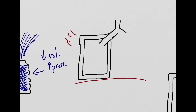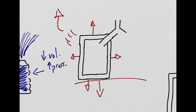On inhalation, the diaphragm contracts and moves inferiorly. The external intercostals will contract as well and bucket handle the ribs up and out. This causes the pleural box to get larger. As we learn in Boyle's Law, as the volume increases, the pressure will decrease. In the intrapleural space, the pressure decreases.